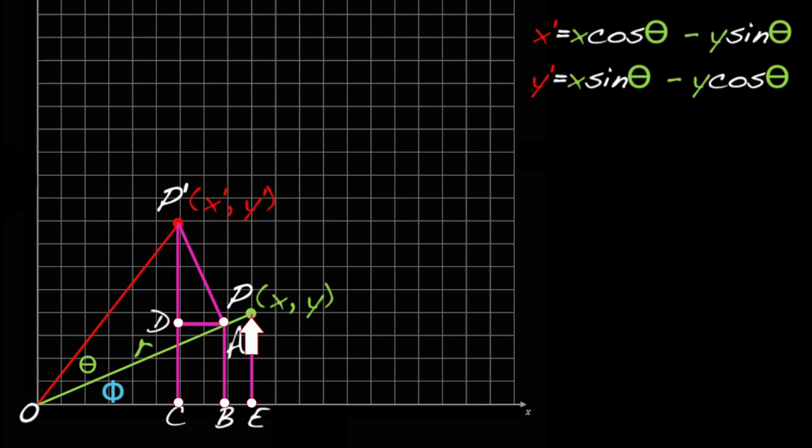The distance EP is y, and the distance OE is x. EP is opposite phi, so sine phi equals EP over r. But EP is y, so sine phi equals y over r. And that means y equals r sine phi.